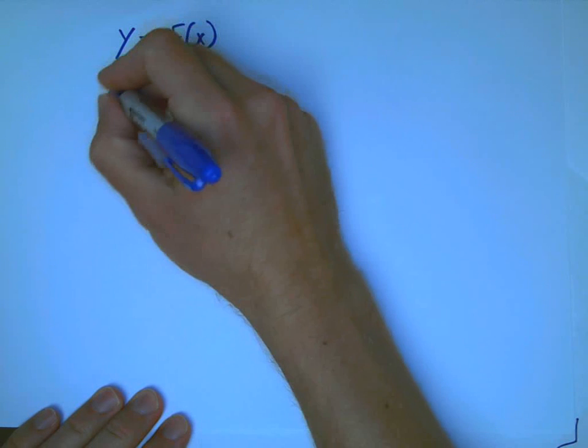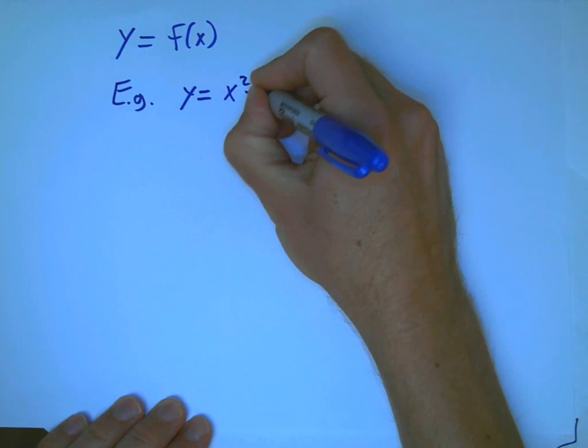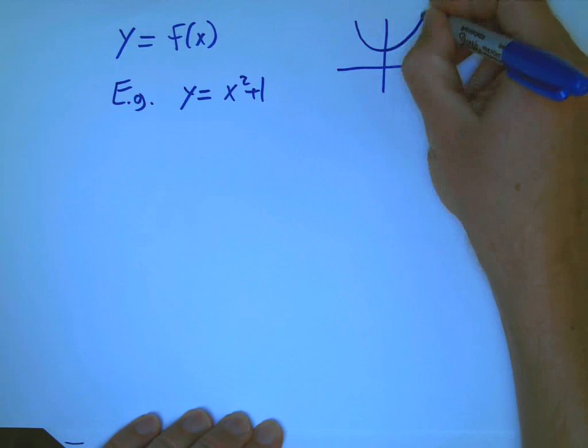For example, we could have y equals x squared plus 1. And we often want to have the graph of that. That's a parabola, lift it up.